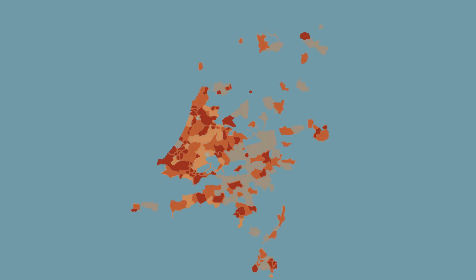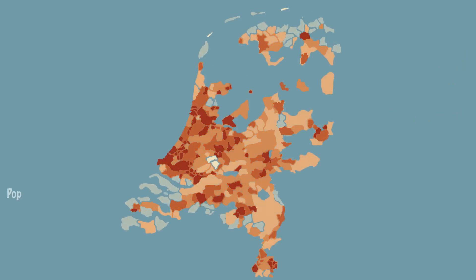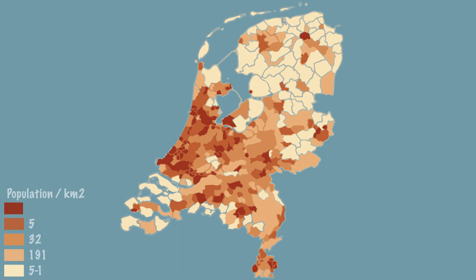Maps can show differences between areas. For example, it is possible to make a map of the population density in the Netherlands per region. This shows that the population density in the west is higher than in the east. In this map, colors are used to indicate differences — the darker the color, the higher the population density.